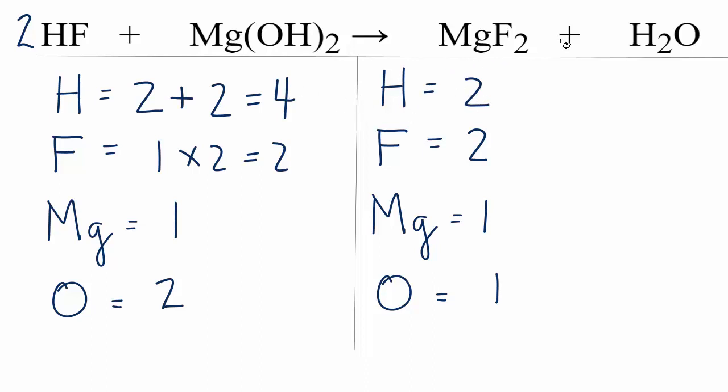We have four here and two here, so on the water, I could put a coefficient of two. Now we have two times two, that'll give us four hydrogens, those are balanced. And then for the oxygen, we have the one times the two, and that gives us two oxygens. And at this point, everything's the same on each side, so this equation is balanced.